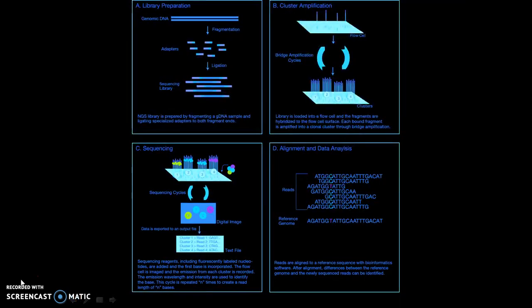In detail, the procedures include library preparation and cluster amplification, where the library is loaded into a flow cell and the fragments are hybridized to the flow cell surface. Each bound fragment is amplified into a clonal cluster through bridge amplification. The steps are then proceeded by sequencing, alignment, and data analysis.